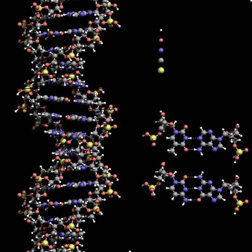Most intercalators are aromatic and planar molecules, including ethidium bromide, acridines, daunomycin, and doxorubicin. For an intercalator to fit between base pairs, the bases must separate, distorting the DNA strands by unwinding of the double helix. This inhibits both transcription and DNA replication, causing toxicity and mutations. DNA intercalators may be carcinogens, and in the case of thalidomide, a teratogen. Nevertheless, due to their ability to inhibit DNA transcription and replication, other similar toxins are also used in chemotherapy to inhibit rapidly growing cancer cells.